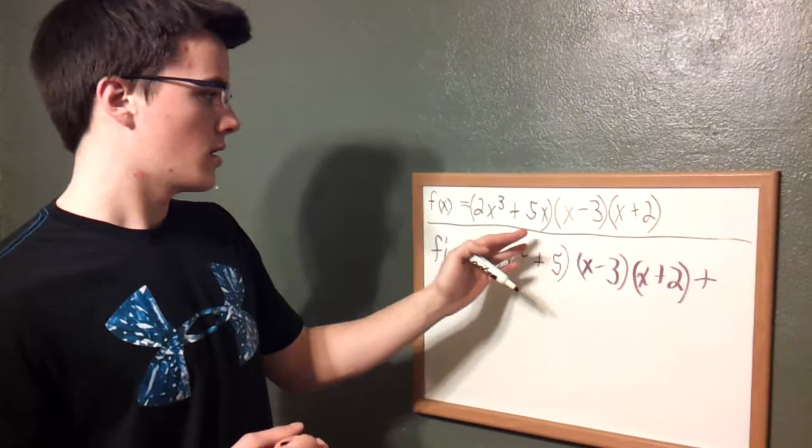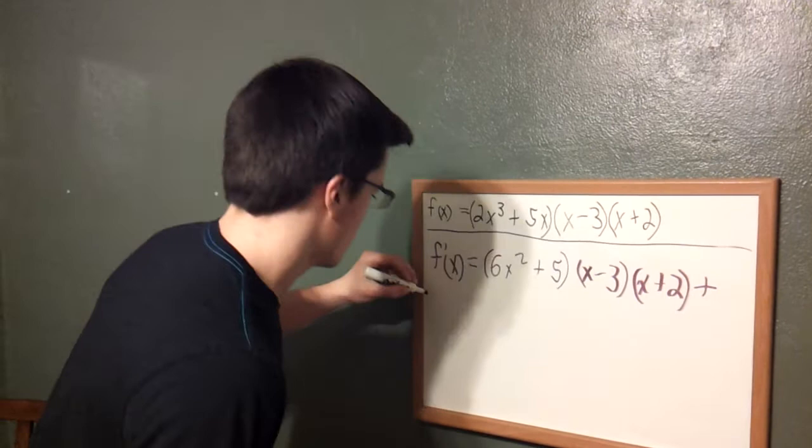And then you add the derivative of the second term, which since it's x minus 3, the derivative of x is 1, and since negative 3 is a constant, it just cancels out and turns into 0.